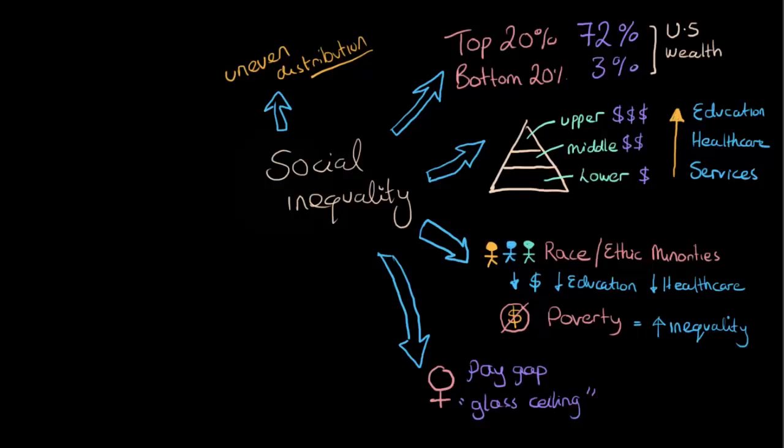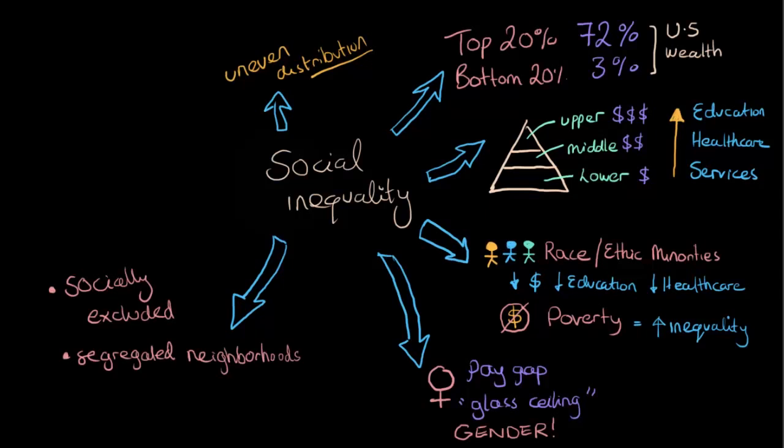Gender is also an important consideration. So what happens when we have these high rates of social inequality? People may feel increasingly socially excluded. They may separate out and live in segregated neighborhoods, and they may also feel politically disempowered. This potentially creates a combination of things which can lead to civil unrest and may also tempt people into criminal activities.